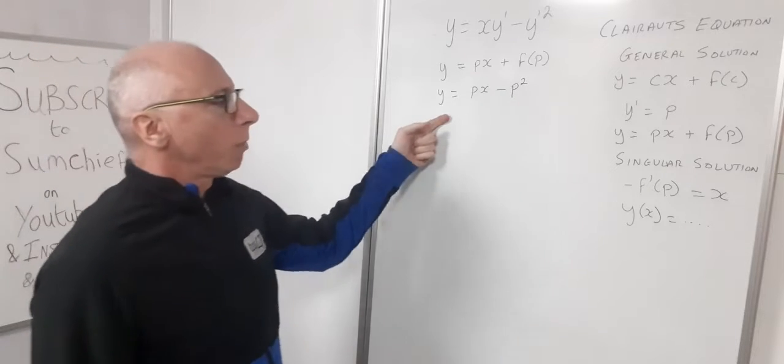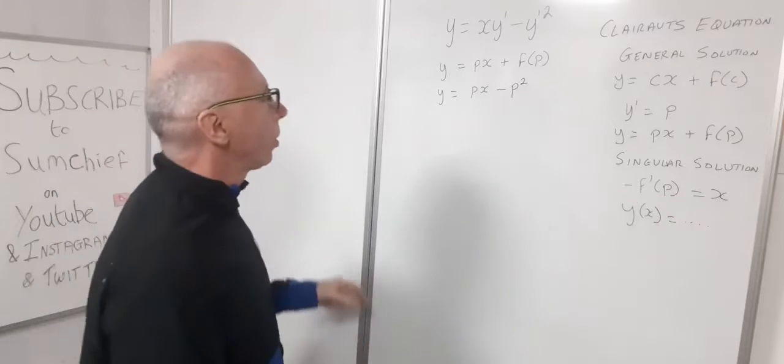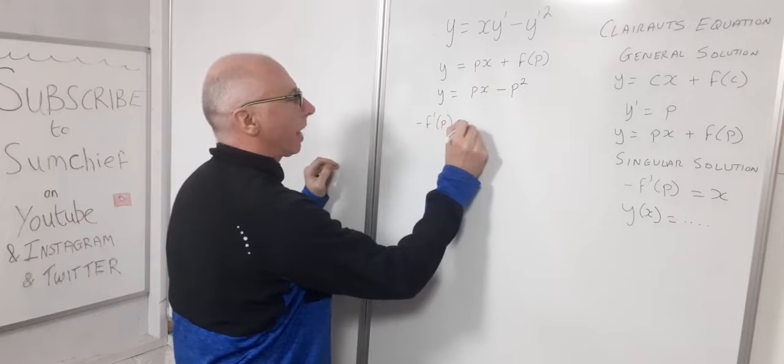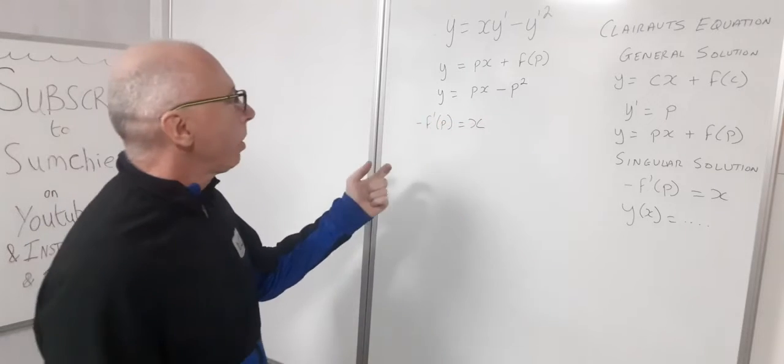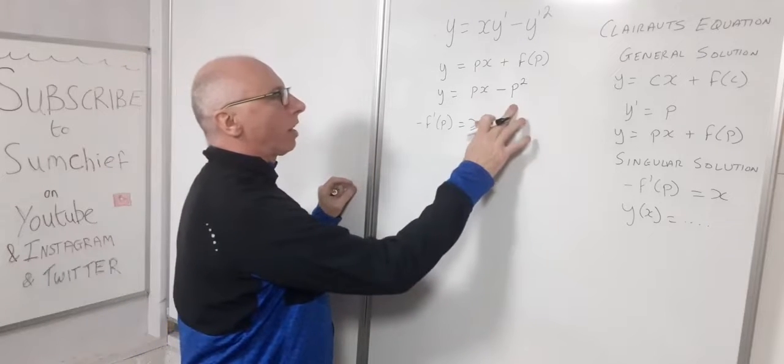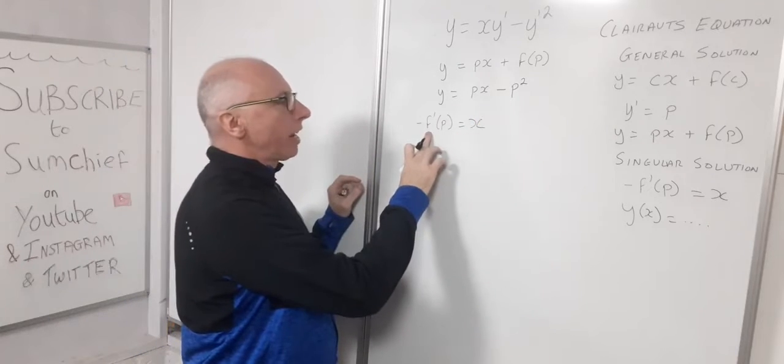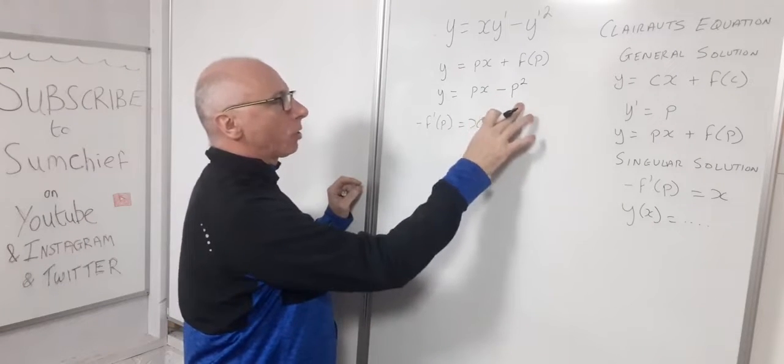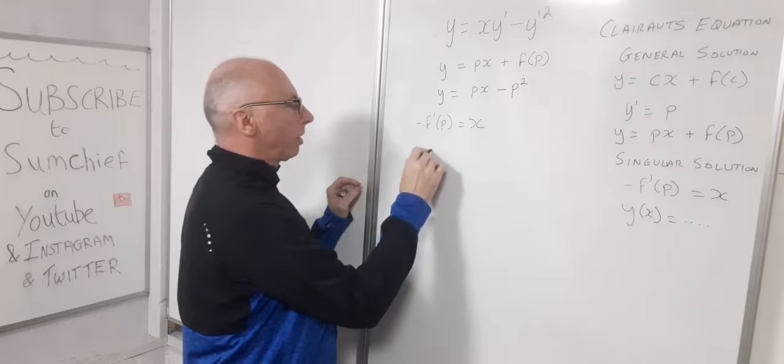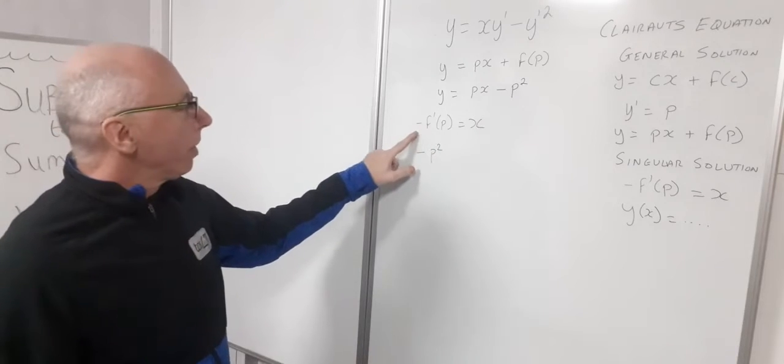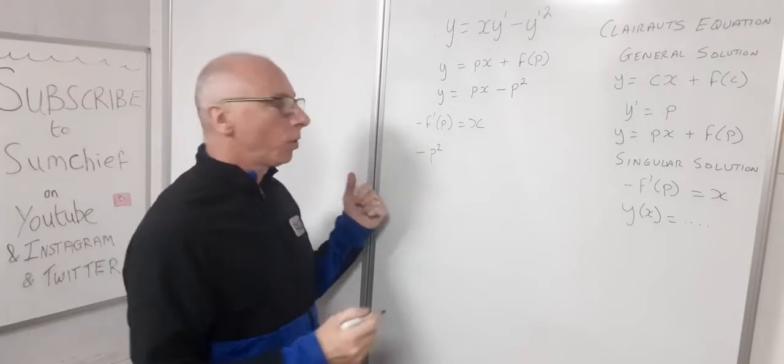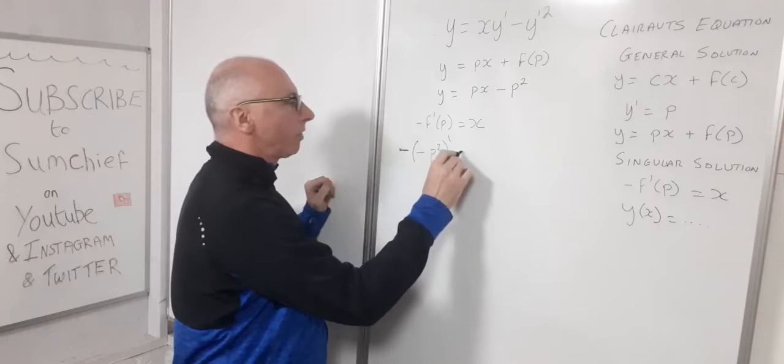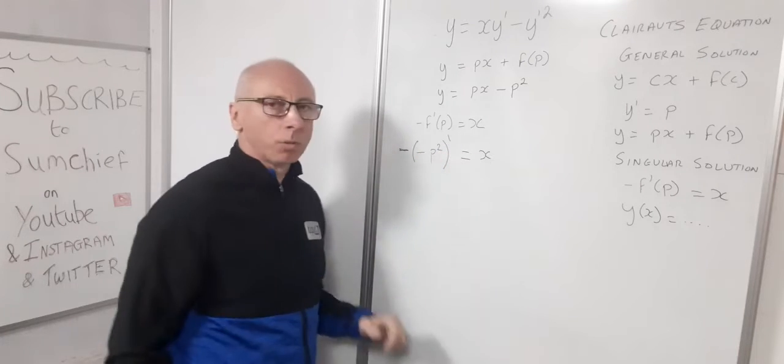Now what we need to do now is use our singular solution. So our minus f prime of p that equals x. So what we want now is our derivative of p squared and the negative version equals x. So now we've got negative p squared. Now here we've got the negative sign here as well. So it's important not to get confused with the minus signs. So we put the minus sign here and take our derivative and set that equal to x.